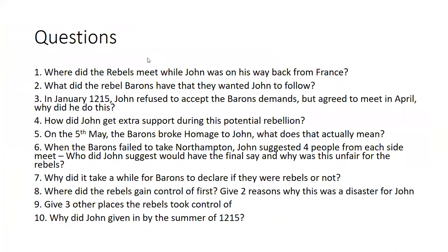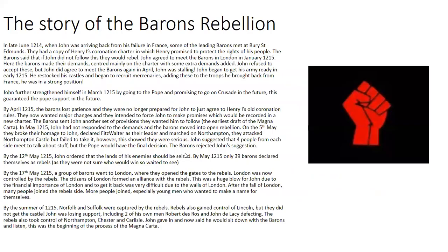The first task is ten comprehension questions. These include: where did the rebels meet when John returned from France? What document did the rebel barons have? Why did John agree to meet in April but then delay? How did John get extra support? What does breaking homage mean? Who did John suggest for the final say in negotiations, and why was this unfair? Why did it take time for barons to declare as rebels? Where did rebels first gain control, and why was this a disaster? Give three other places rebels took control of, and why did John give in by summer 1215? Spend ten minutes on these questions.